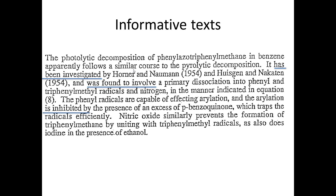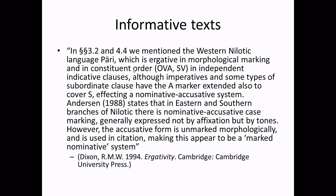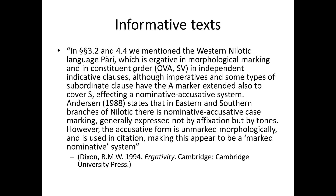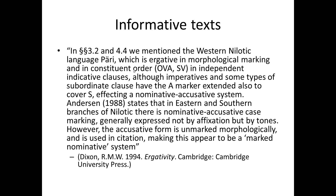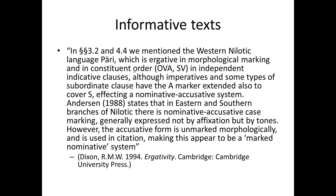It's also clear that the topic affects the type of language used. The terminology in the text we just looked at is specific to chemistry. A text about linguistics, for example, would use different vocabulary, as in this example: 'In paragraphs 3.2 and 4.4, we mentioned the Western Nilotic language Päri, which is ergative in morphological marking and in constituent order — OVA, SV — in independent indicative clauses, although imperatives and some types of subordinate clause have the A marker extended also to cover S, effecting a nominative-accusative system.' Anderson (1988) states that in eastern and southern branches of Nilotic, there is nominative-accusative case marking, generally expressed not by affixation but by tones. However, the accusative form is unmarked morphologically and is used in citation, making this appear to be a marked nominative system.